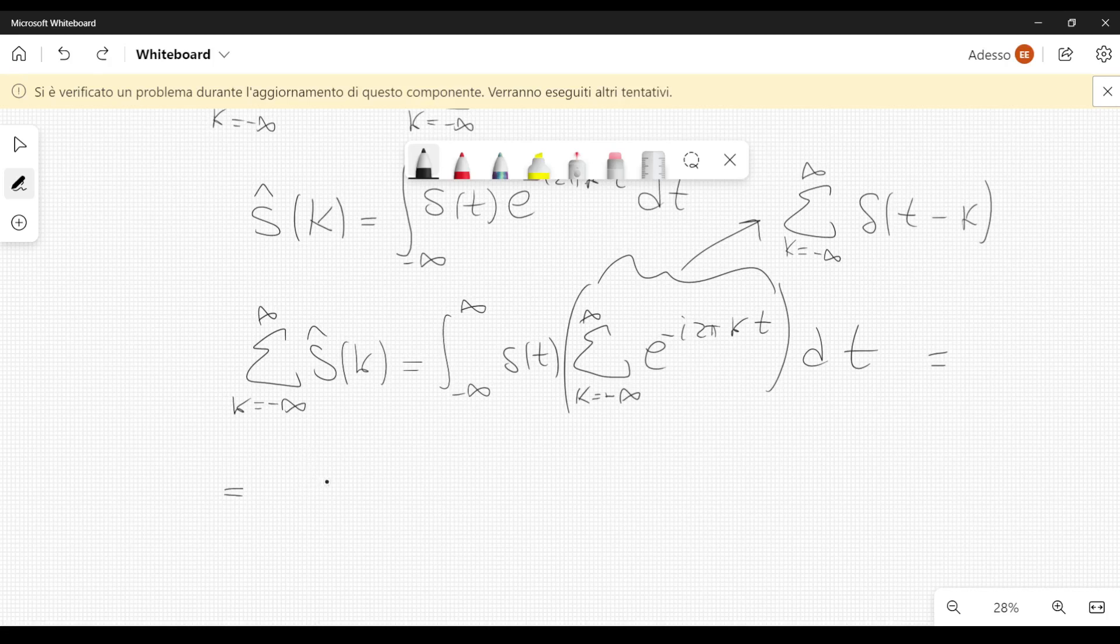So we can rewrite this as summation, let's put the summation outside of the integral, over k from minus infinity to plus infinity, we have S of k, because we can evaluate S of t at t equal to k, and then we integrate from minus infinity to plus infinity, delta of t minus k dt, and this will be just one, and therefore we are left with summation over k from minus infinity to plus infinity S of k, like this.